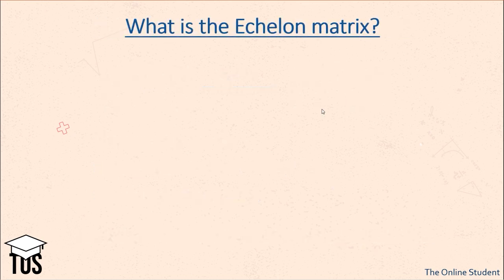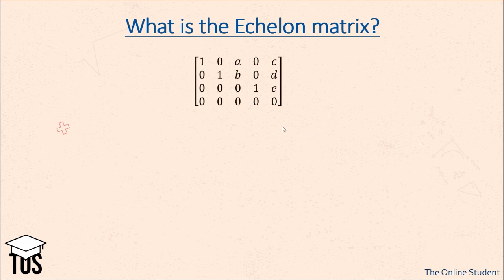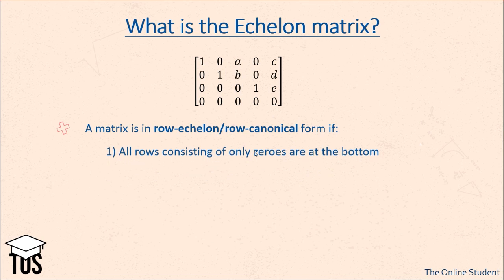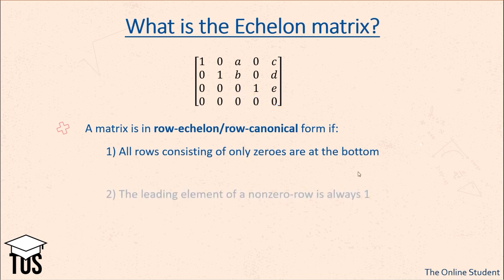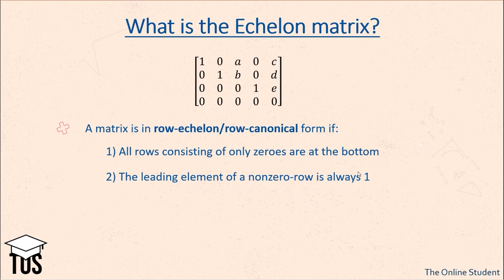You might be wondering what the echelon matrix is. A matrix is in row echelon or row canonical form if: firstly, all rows consisting of only zeros are at the bottom; and secondly, the leading element of every non-zero row is always 1. As we can see in the first row, the leading element is 1, and same for the second and third rows.